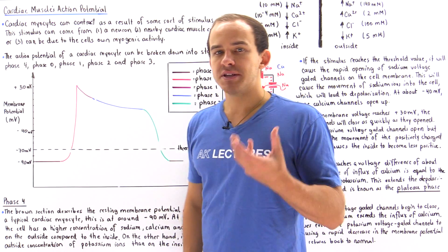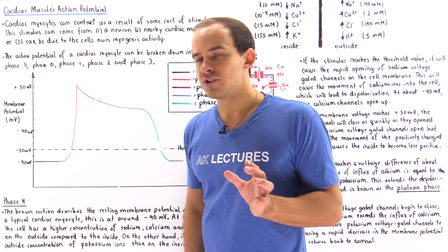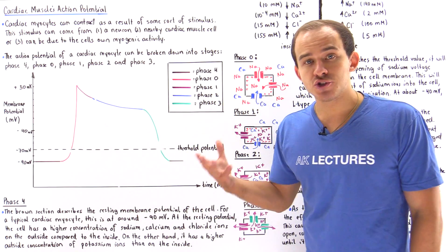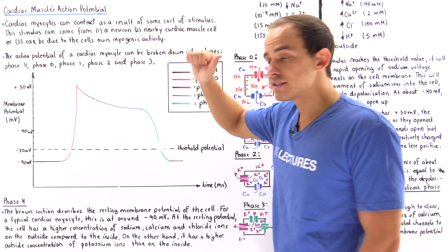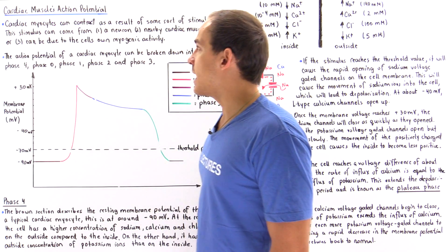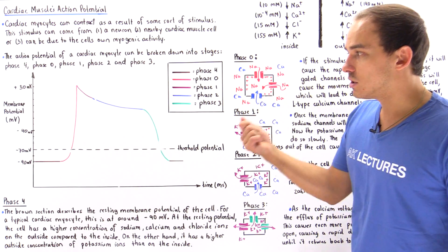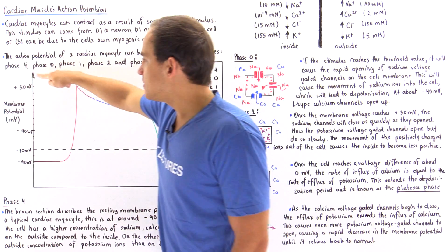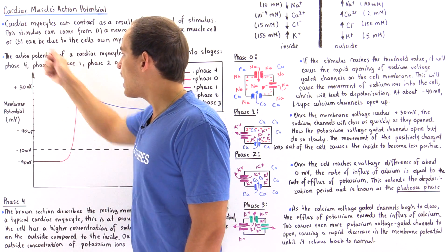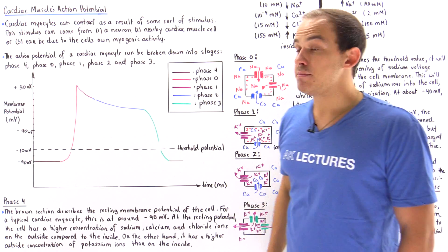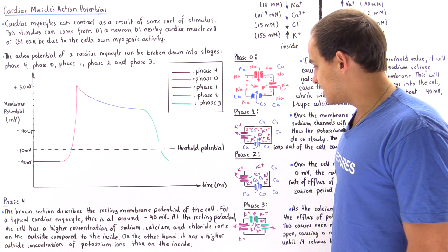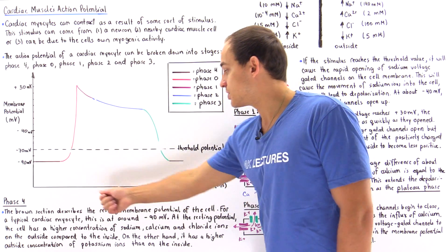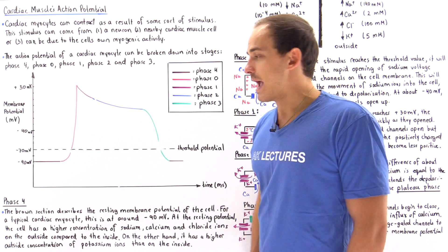Generally speaking, the action potential can be broken down into five phases, as described by this graph. The y-axis is the membrane voltage difference — the potential difference between the inside and outside of the cardiac myocyte membrane, known as the sarcolemma, given in millivolts. As we go higher along the y-axis, the voltage increases and becomes more positive. The x-axis is time, given in milliseconds, and as we move along it, time progresses.